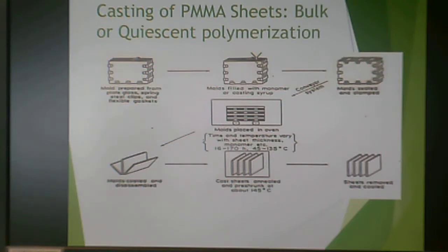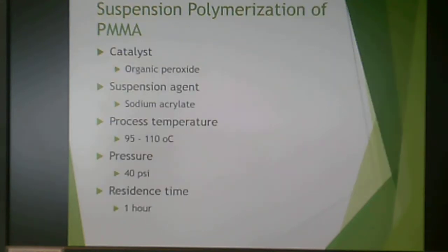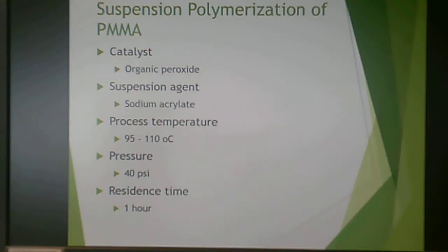The sheets are then removed, cooled, and used for their particular application. Suspension polymerization is often done with an organic peroxide catalyst and is suspended by sodium acrylate. This is done at 95 to 110°C under pressure, and typically completed in about an hour.